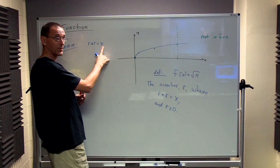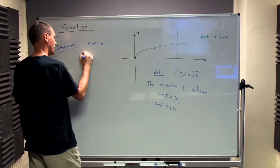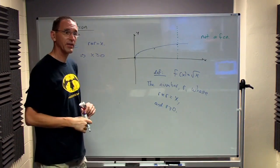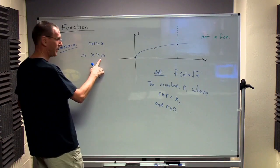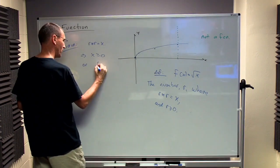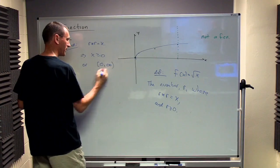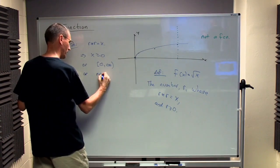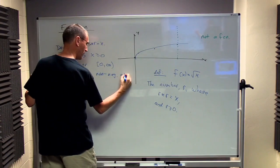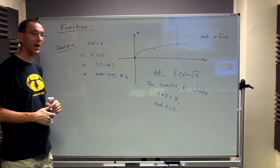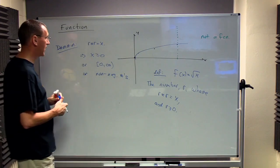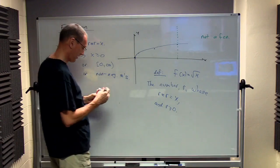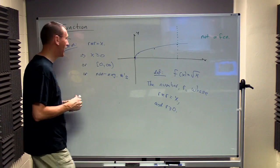So the value of X that I put into this has to be greater than or equal to 0. So this is one way to talk about the domain. Or I could use interval notation and say that. Or I can tell you it's a set of non-negative numbers. It's not all positive numbers because X equals 0 is in there and we need to say non-negative to make sure we include that.